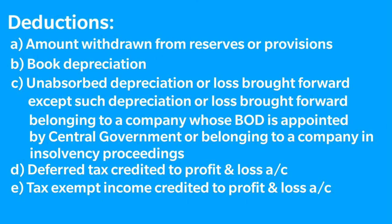The reductions will include amounts which are withdrawn from your provisions or reserves to the extent such amounts are credited to the profit and loss account. The deductions also include your deduction for book depreciation, the amount of loss brought forward or unabsorbed depreciation whichever is less — the loss will not include unabsorbed depreciation in this case — the amount of deferred tax if it is credited to your profit and loss account, and any tax exempt income which is credited to your profit and loss account.